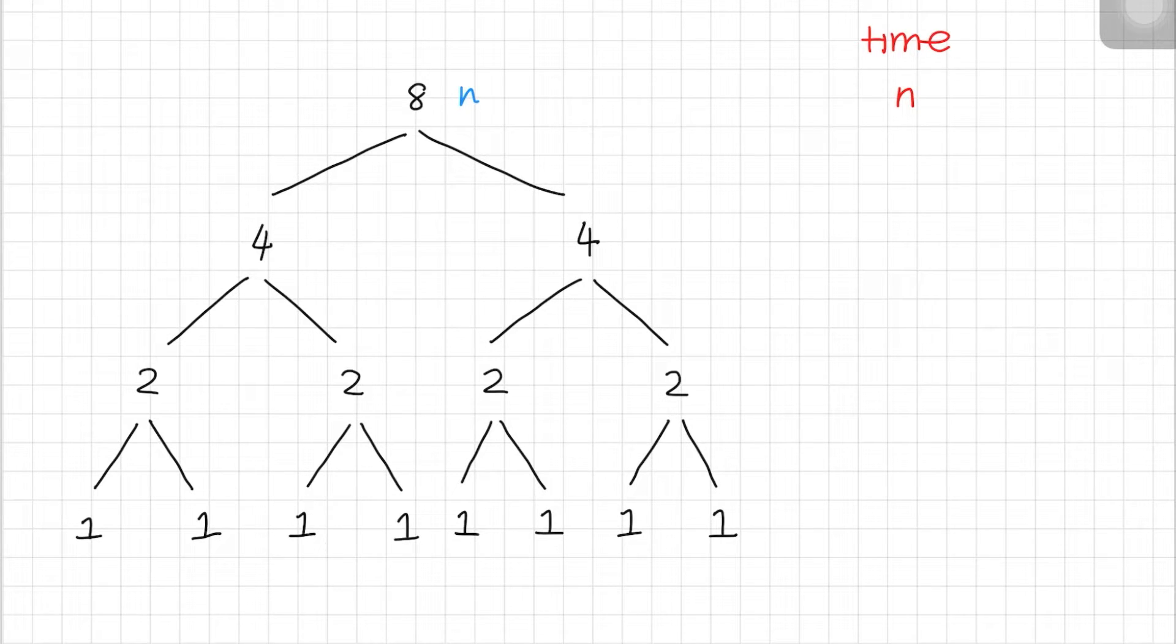Now, in the second iteration, we'll be getting two arrays of size 4 and 4, or basically two arrays of size n divided by 2. To sort this subarray, we have to check every element in this subarray to the pivot, just like what we did for the first level. However, don't forget that we have two arrays of size n over 2. So the total time complexity for this level is n over 2 times 2, which is basically n.